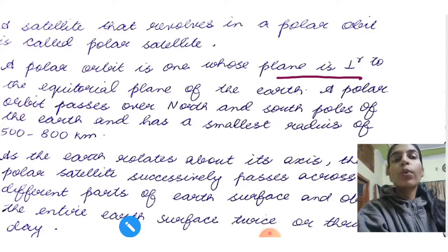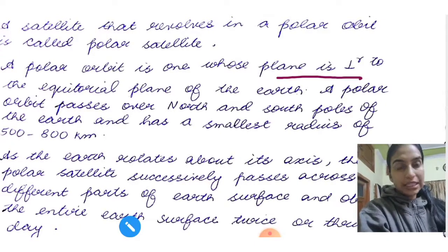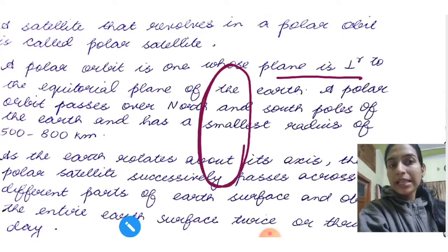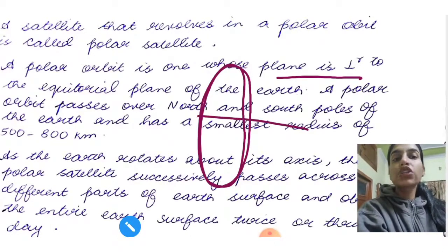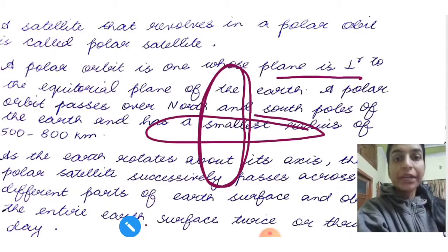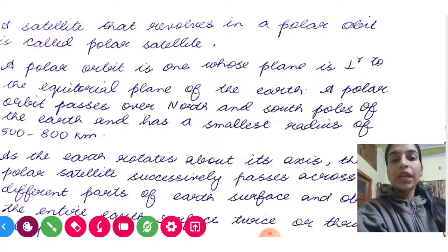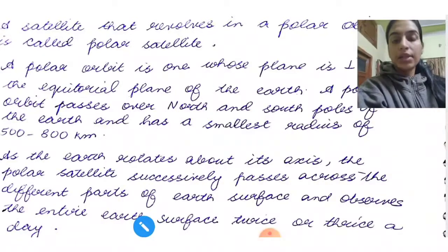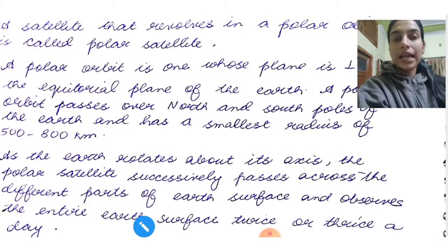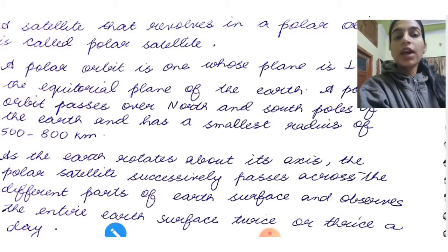Which poles does it pass? North and south. And if we talk about geostationary, that's east and west. Then, as the earth rotates about its axis, the polar satellite successively passes across the different parts of the earth surface and observes the entire earth surface twice or thrice a day.